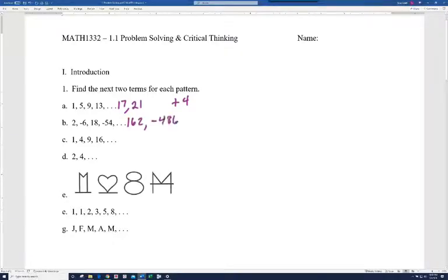Alright, on letter B, the next two numbers are 162 and negative 486. So in this case, what's the pattern? Well, we're multiplying by negative 3 each time. By the way, in B, we multiplied by negative 3. Another pattern would be each time to divide by some number.